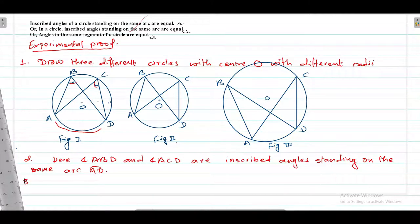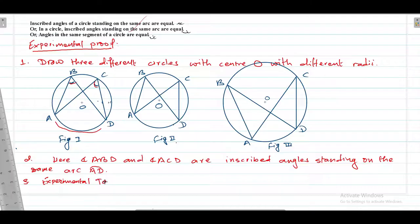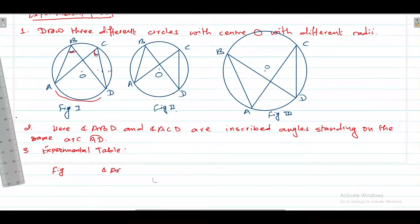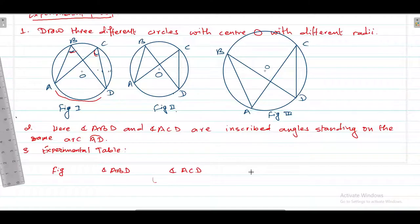Now in number three is the turn of the experimental table. Here we have to draw the experimental table. In the experimental table: the first column is for the figure number, the second column is for the inscribed angle ABD, the third column is for the other inscribed angle ACD, and the fourth column is for the result.